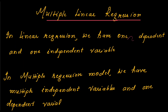In linear regression, we have one dependent and one independent variable. This we have seen in the previous session — in the given data set, there were values of x and values of y given. x was your independent variable and y is your dependent variable.